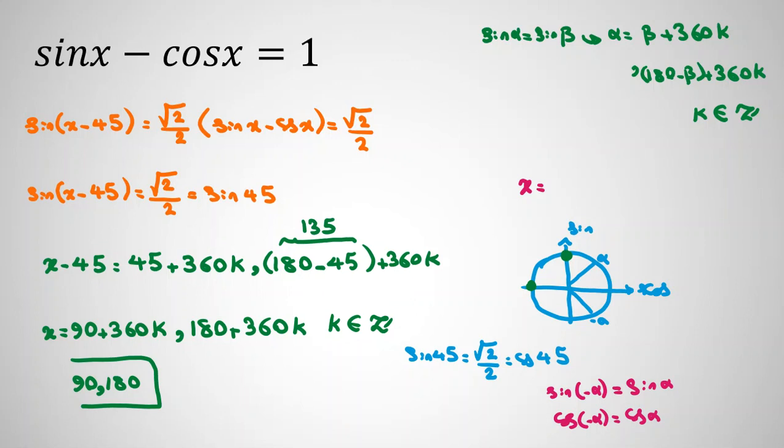Because for 90 degree, you say pi over 2 plus 2 pi k. And for 180, you say pi plus 2 pi k, which k is integer. So these are our answers for x in radians.